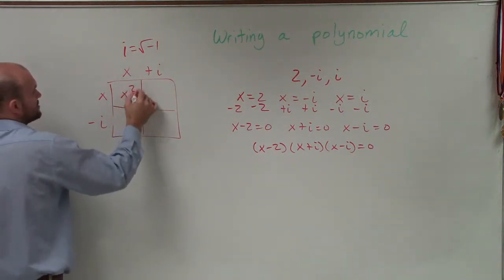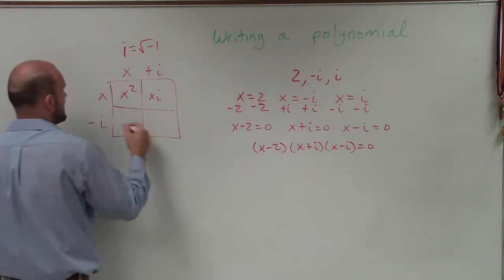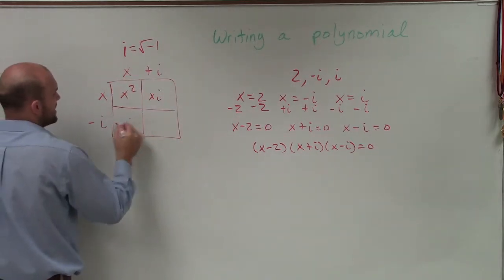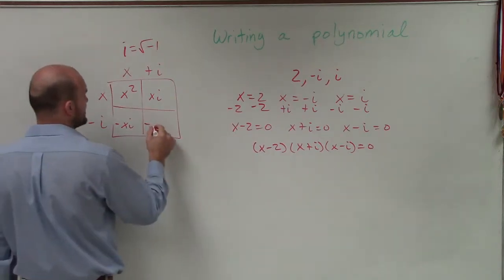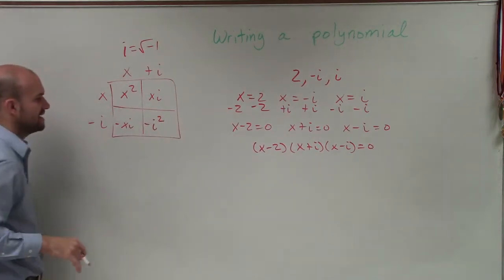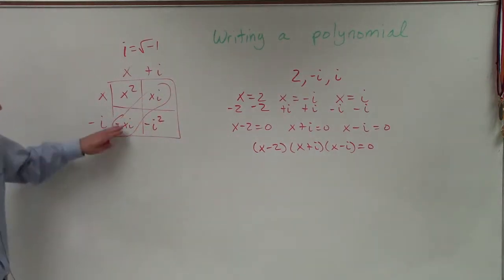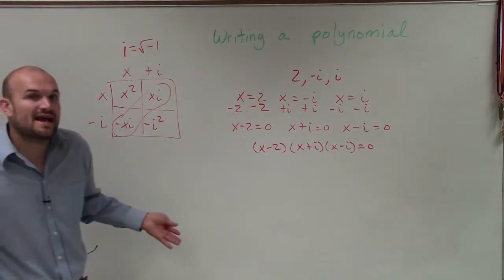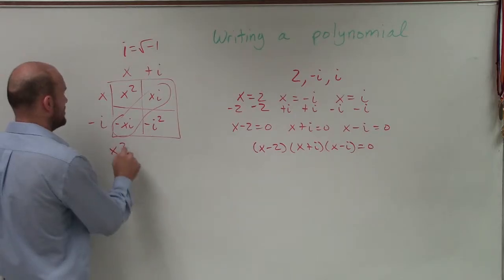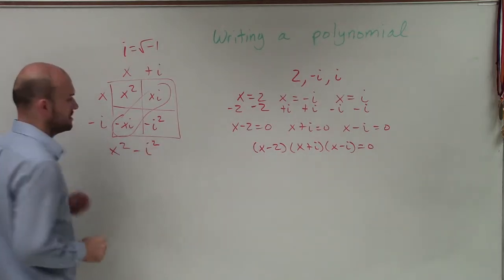x times x is x squared. x times i is xi. x times negative i is negative xi. And negative i times i is going to be negative i squared. And we'll talk about that in a second. But anyways, the main important thing I want you guys to understand is negative xi and xi, those cancel out. They add to 0. So I'm left with x squared minus i squared.